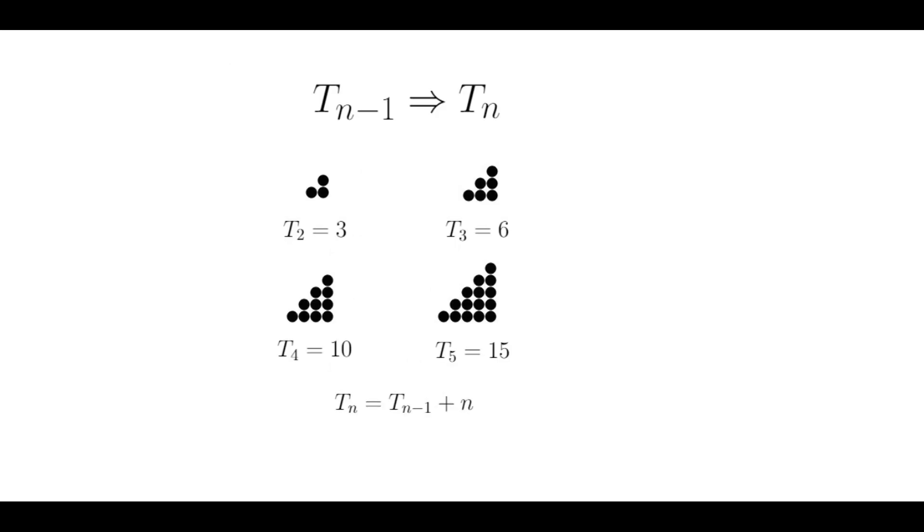Now I'd like to share a more visual proof because, for me at least, it helps me understand more of what's going on here. Remember that to get from Tn minus 1 to Tn, I just add another row of n objects to form the larger triangle. In other words, Tn is just Tn minus 1 plus n.